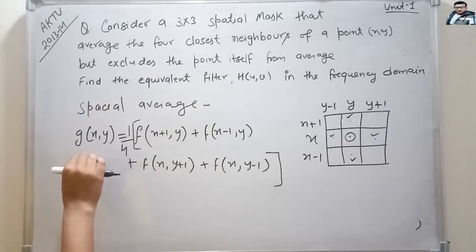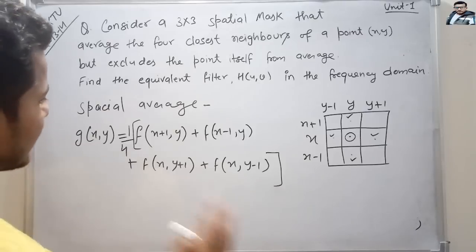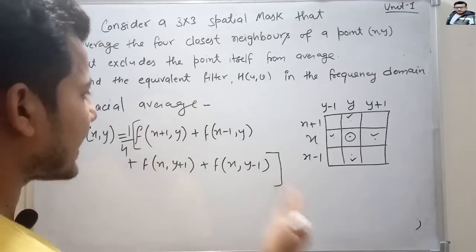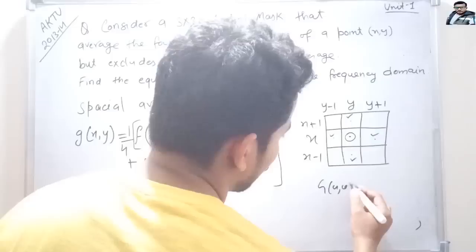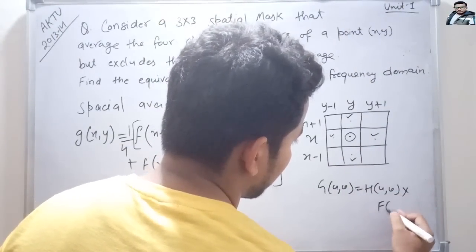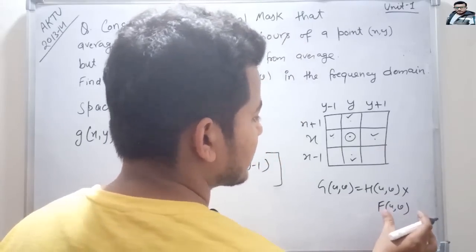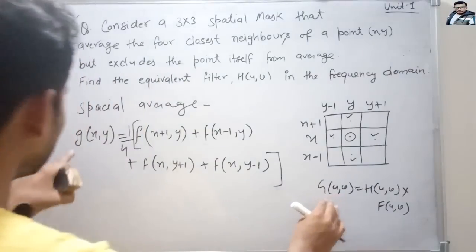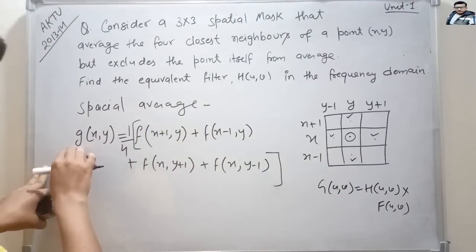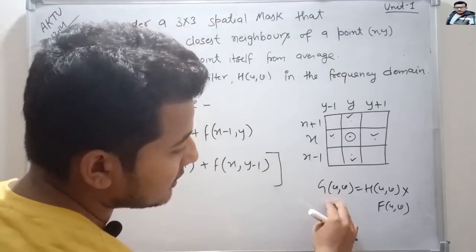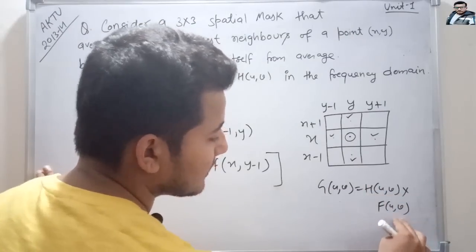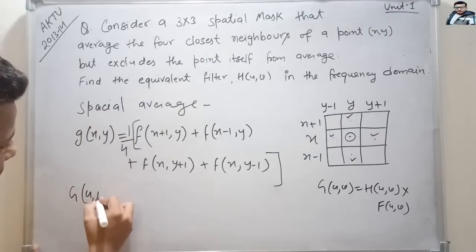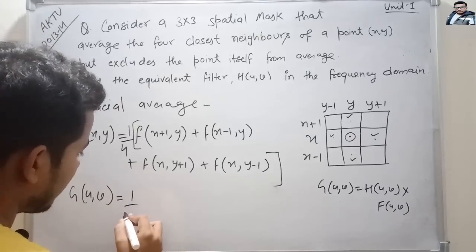Now we take the Fourier transform of this spatial average to find the filter in the frequency domain. We already know that G(u,v) = H(u,v) · F(u,v), where F(u,v) is the Fourier transform of the image and H(u,v) is the filter in the frequency domain. When we Fourier transform g(x,y), we get G(u,v) = (1/4) times the Fourier transforms of each term.